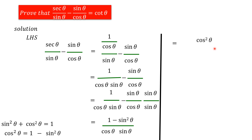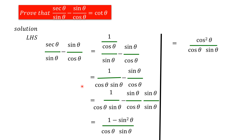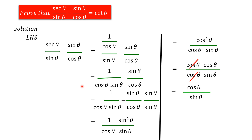Substituting cos squared theta instead of 1 minus sin squared theta, we get cos squared theta divided by cos theta into sin theta. We can rewrite cos squared theta as cos theta into cos theta, divided by cos theta into sin theta. Now, we can cancel out one cos theta term, and we get cos theta by sin theta.